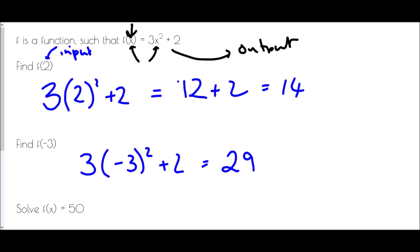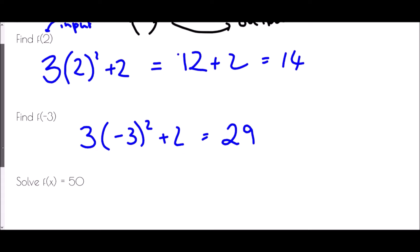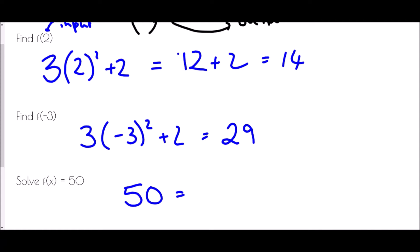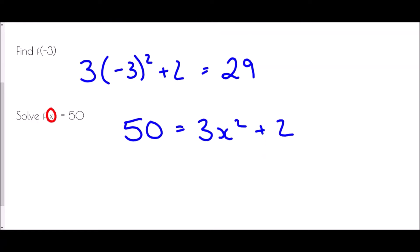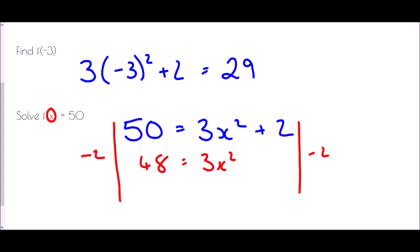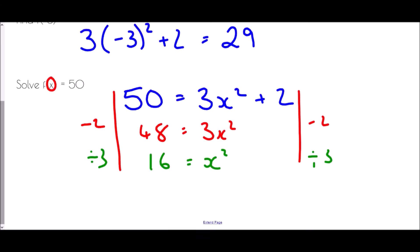The last bit asks us to solve f of x equals 50. What this is saying is that 50 is the output, so it's telling me that 50 equals 3x squared plus 2. I want to know what the input must have been, so I'm going to solve the equation. Subtract 2 from both sides: 48 equals 3x squared. Divide by 3: 16 equals x squared. Then square root — remembering there is a positive and negative result — so x equals plus or minus 4. Either one of those would have worked as the input.